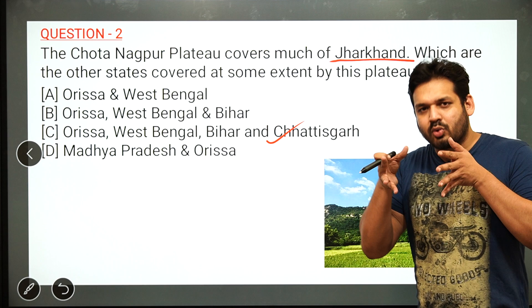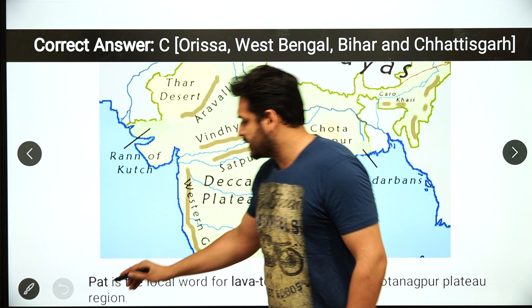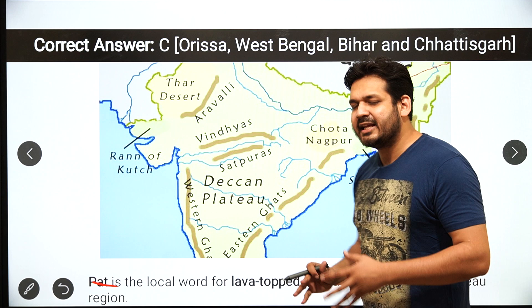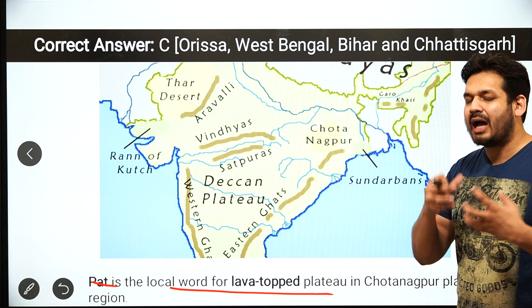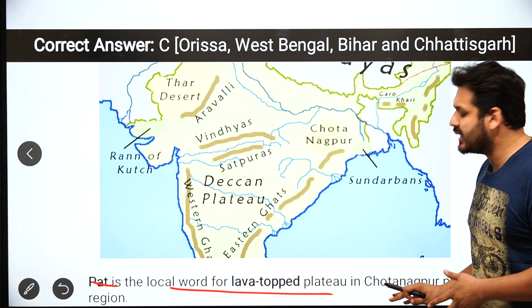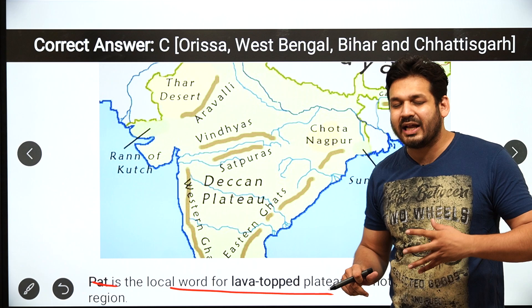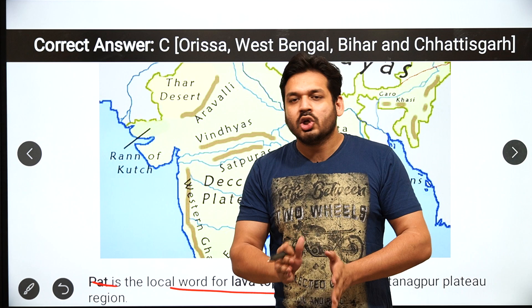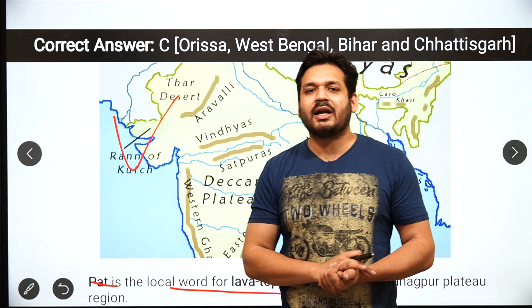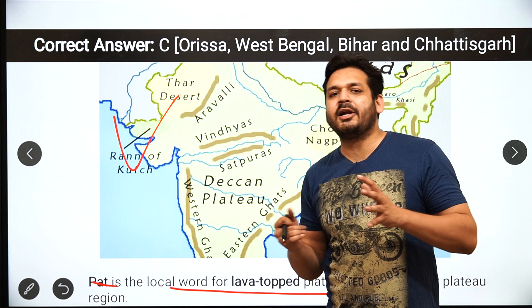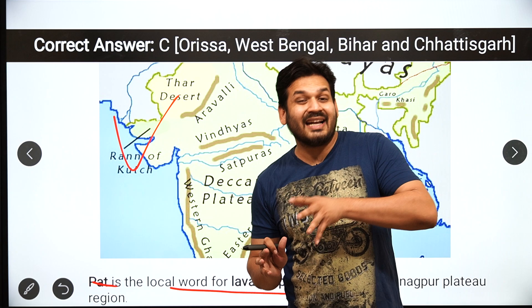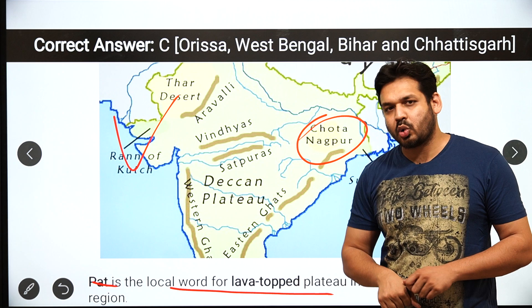Jharkhand is the core part of the Chhota Nagpur Plateau, also called 'pat lands.' 'Pat' is a local word for lava-topped plateau — lava-topped flat land — which is why the region is called Chhota Nagpur Plateau or pat lands. It is part of peninsular India, and when we study the physiographic divisions of India, the peninsular plateau includes the Deccan Plateau and Central Highlands.